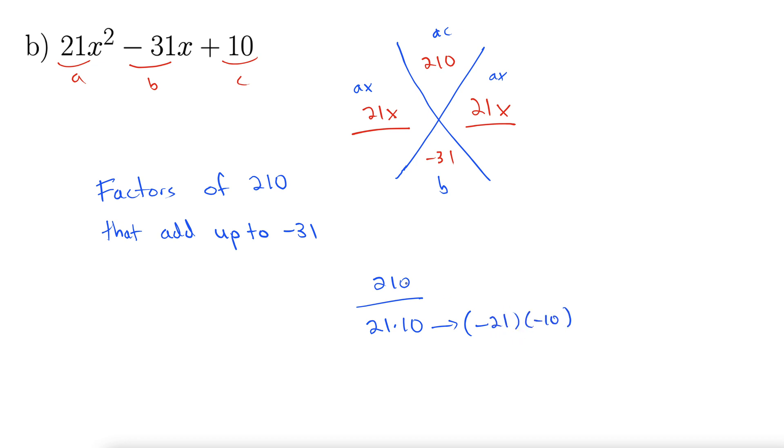How can we make that negative 31? Well, let's change it slightly. Let's make this negative 21 times negative 10. We multiply them together, we get 210. Check. We add them together, we get negative 31. Check.